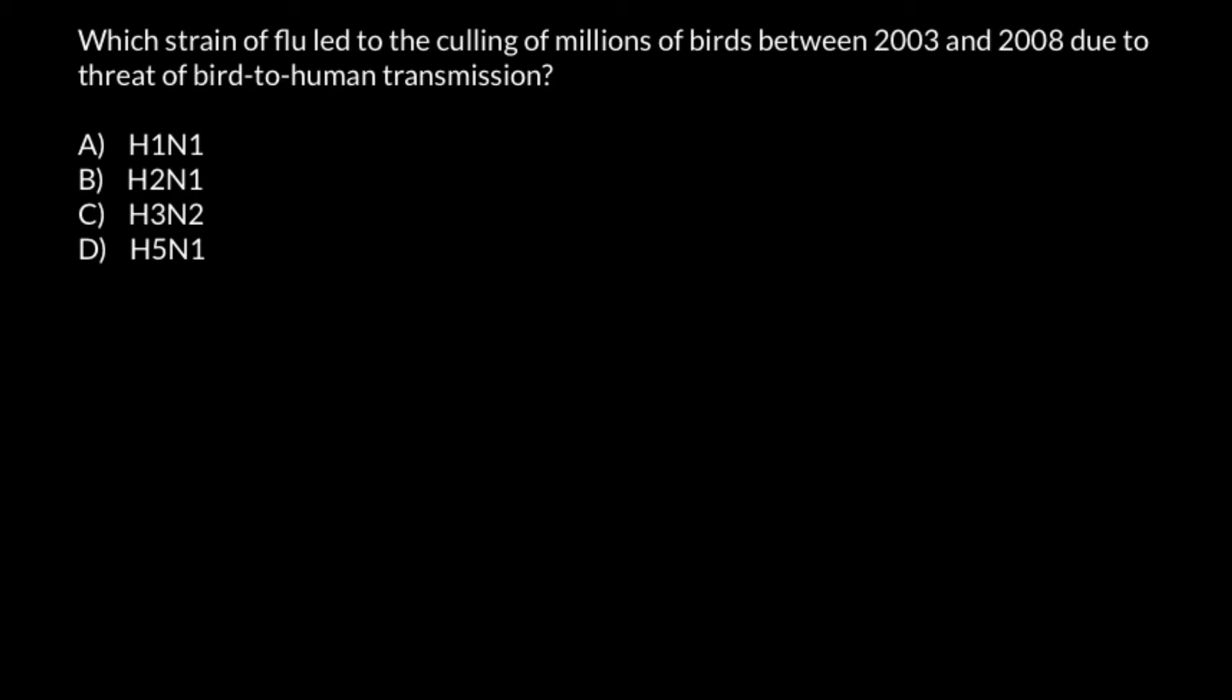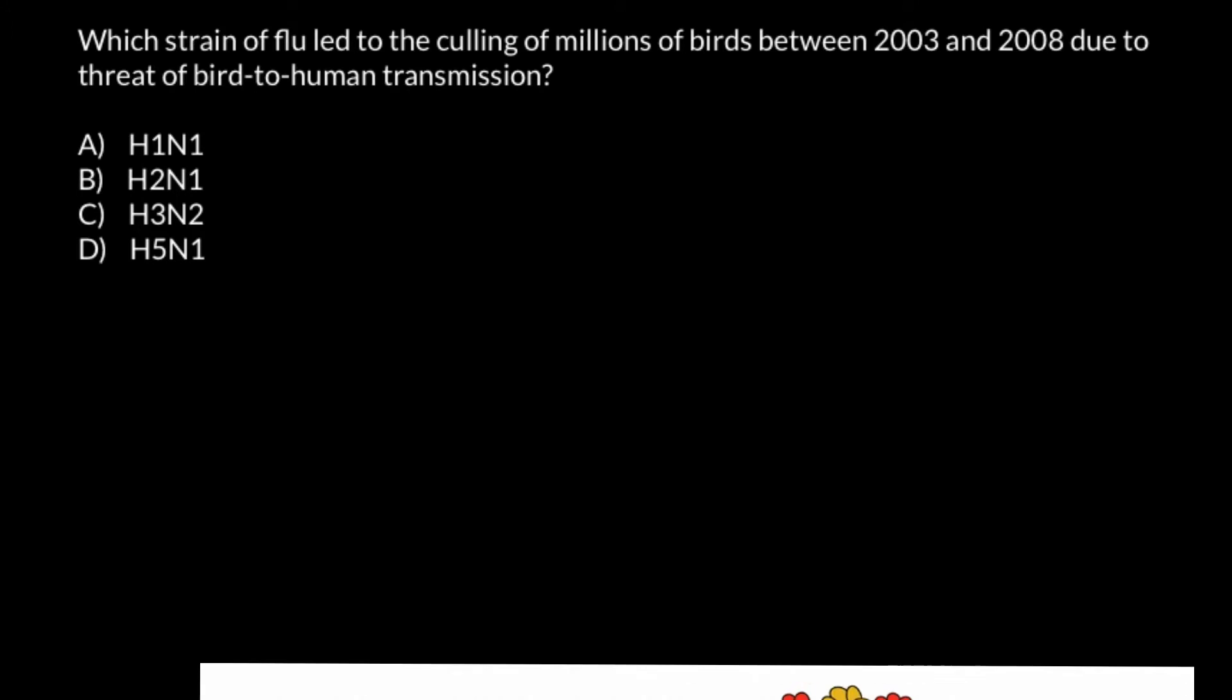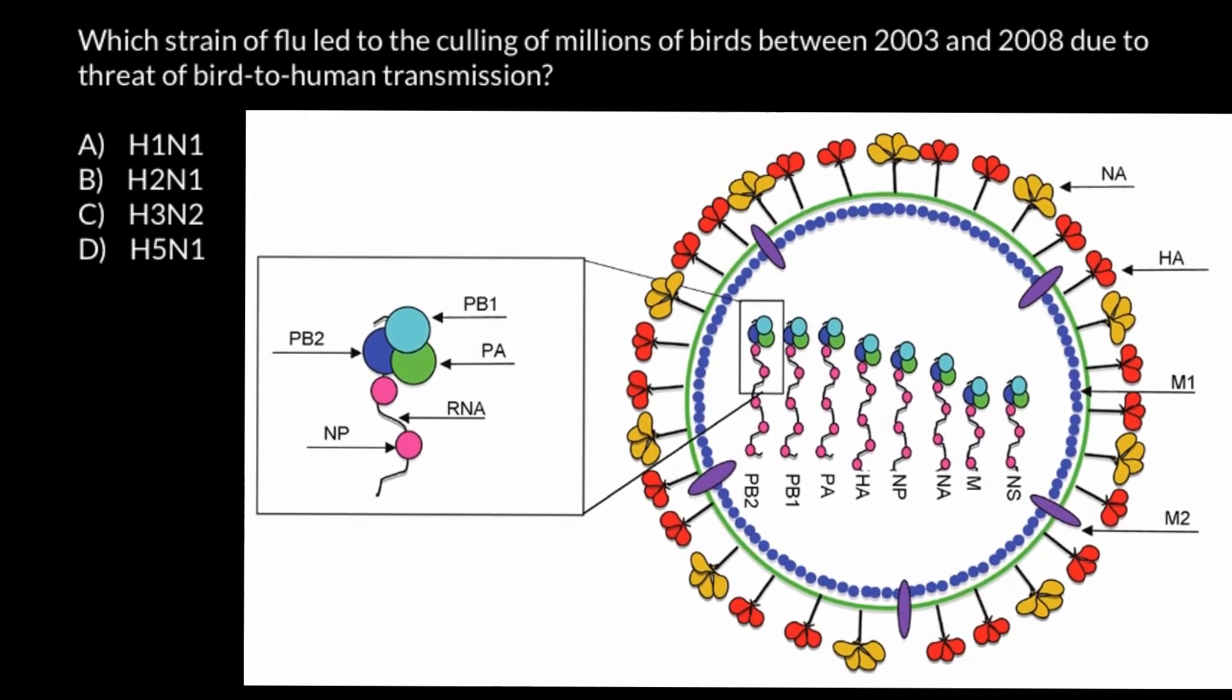All these names consist of two letters and two numbers that follow these letters. If you take a look at this picture, you would see that influenza virus on its surface has two types of proteins.